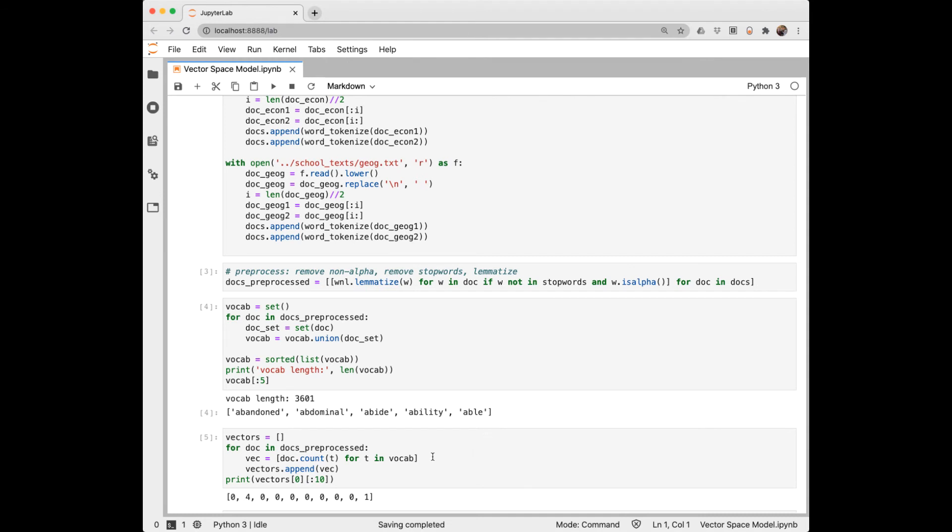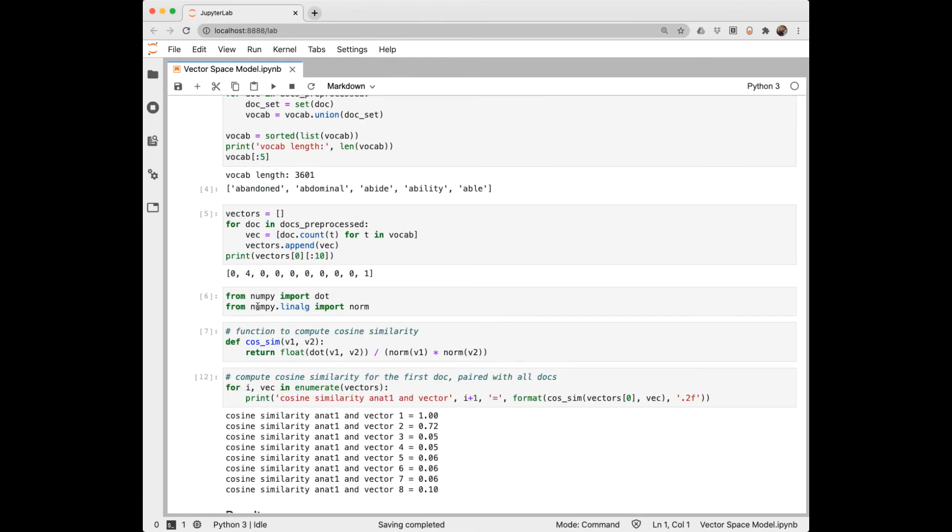Now I want to create my vectors and I'll create a list of vectors. So I'm going to go through each of the eight documents. And each position in the vector will be the count of that vocabulary word. Here I've printed out the first ten elements of vector number one.